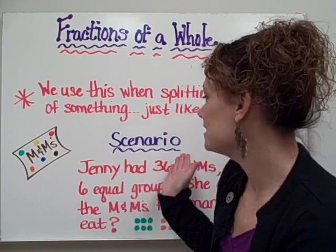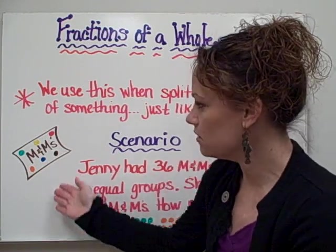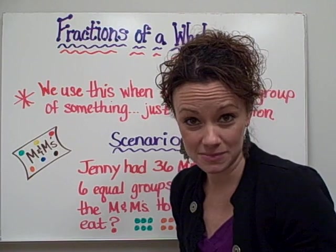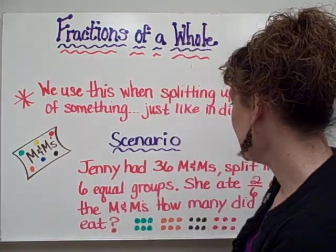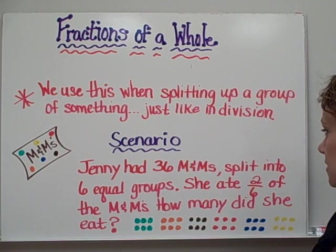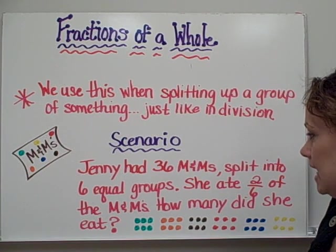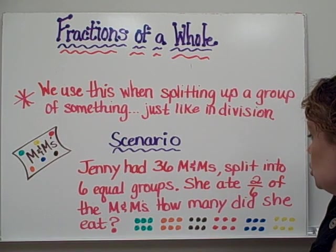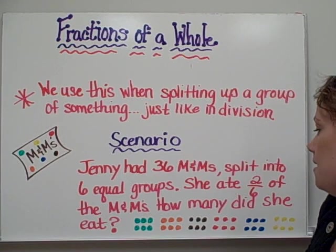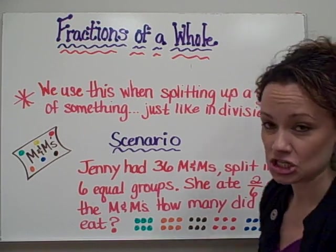So for our first example, for our first scenario, I'd like you to think of a bag of M&Ms. And here's our story problem. Jenny had 36 M&Ms. She split them into six equal groups. She ate two-sixths of the M&Ms. How many did she eat?